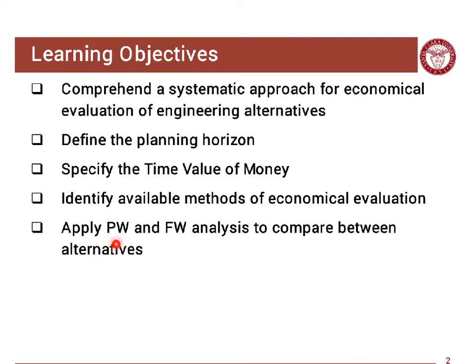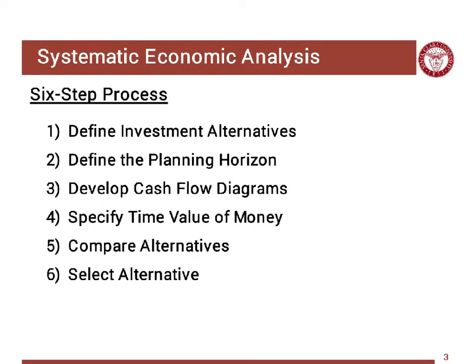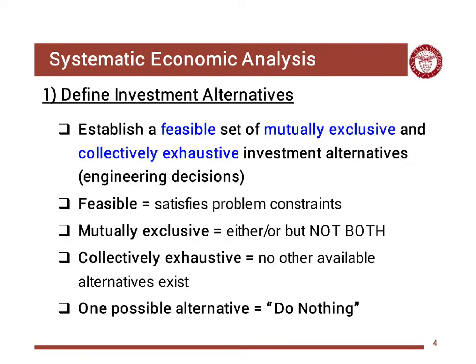The process includes six steps. The first is defining your investment alternatives or engineering alternatives, which is a typical part of the engineering design process. You need to identify your alternatives, and they need to be feasible — meaning you need to come up with a feasible design — mutually exclusive, and collectively exhaustive.